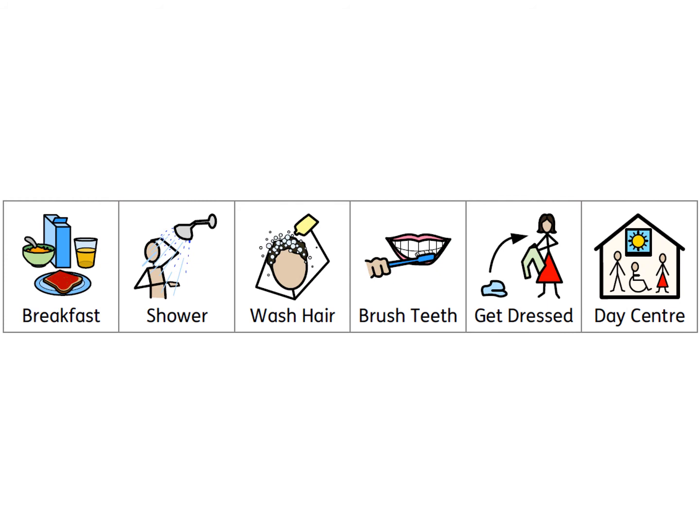Visual timetables can also be used in the form of a daily routine. These can be permanent pictures or Velcroed so the person can remove them when the task has been completed.